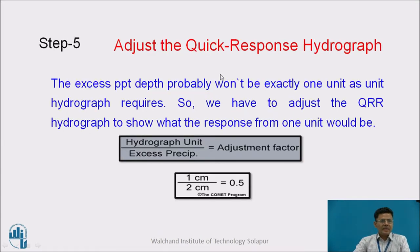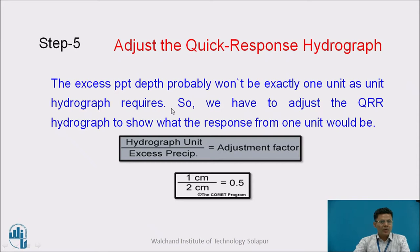Now adjust the quick response hydrograph. The excess precipitation depth probably won't be exactly one unit as the unit hydrograph requires, so we have to adjust it. We adjust the QRR hydrograph to show the response from one unit. The adjustment factor equals the hydrograph unit divided by the excess precipitation depth.